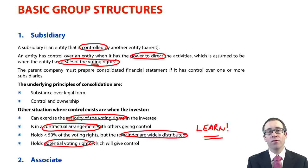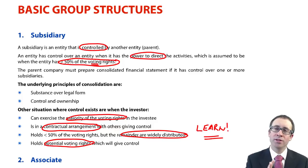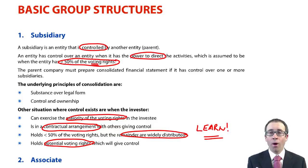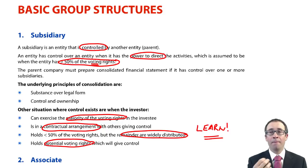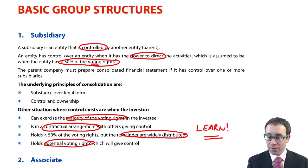If you have the ability to convert debentures into ordinary shares in the future, the standards take the view that you will exercise the debenture and convert it into shares, because it's a cheaper way of acquiring shares. So in the future we will have control, and therefore the standard deems that we have control today. None of those situations are likely to crop up within the first part of question one — it's just going to be a simple exercise of having more than 50% of the shares. But from a discursive aspect, in part B of question one or within questions two or three, you could be asked to discuss any one of those situations.